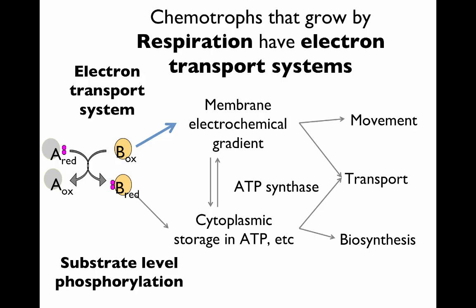Now we have all these high-energy electrons from breaking down other stuff. We need some reduced electrons for cell synthesis, but we also need a lot more ATP. What chemotrophs that grow by respiration do is they have electron transport systems. They take these high-energy electrons, run them through the electron transport system, which makes a membrane electrochemical gradient, and then this is used to synthesize ATP. This chemical energy stored as ATP is then used in movement, transport, and biosynthesis, but the electrochemical gradient can also sometimes be used directly in movement and transport.